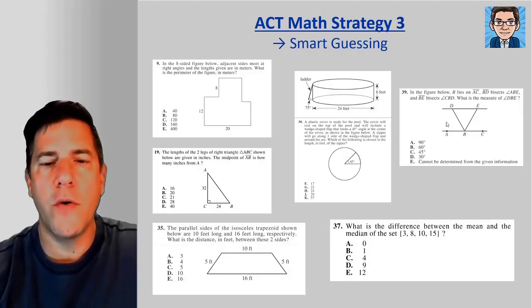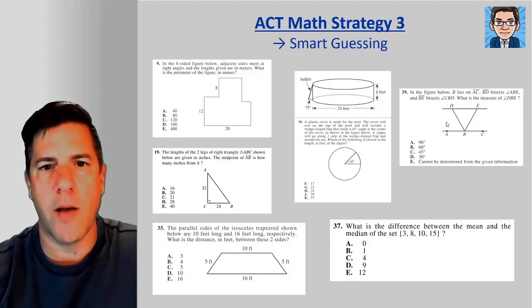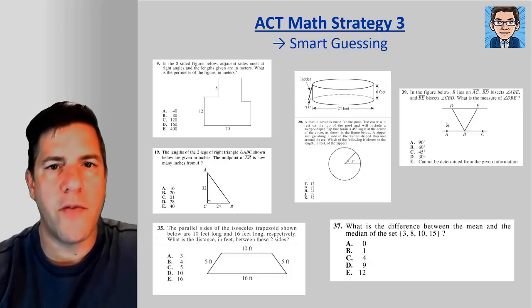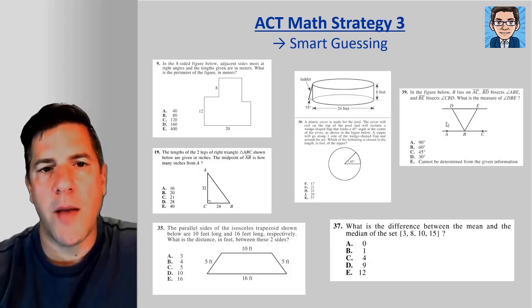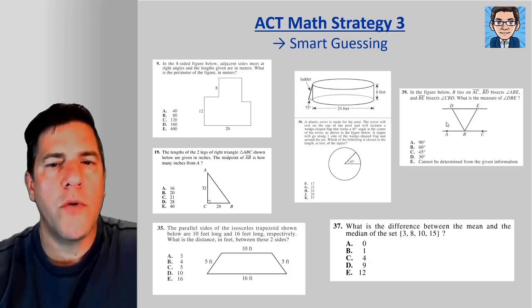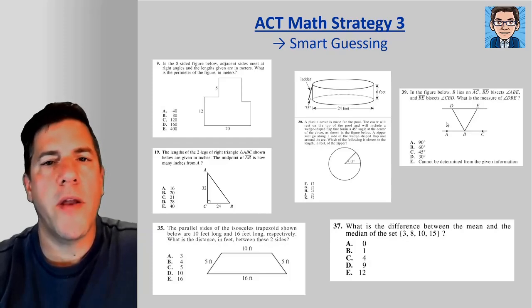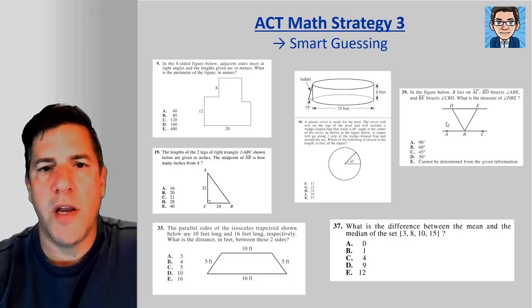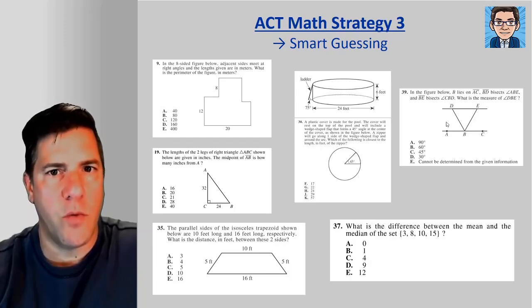If we knew how to do every single ACT problem and never ran out of time, there'd never be any need for guessing. But the reality is we get stuck on problems and we run into time constraints. So there are times when we need to guess, but we can make that guessing a lot smarter rather than just picking a random one out of five. There's strategies we can use to make those guesses a lot better. I've got six ACT problems here that we're going to go over and we're going to do smart guessing with to show how that strategy works.